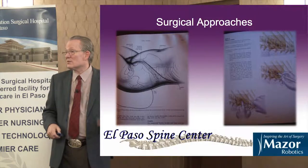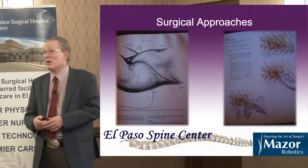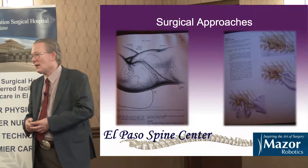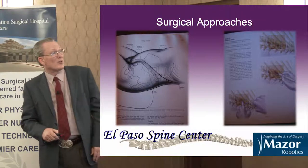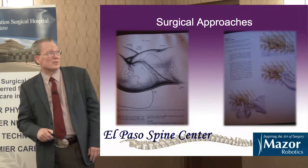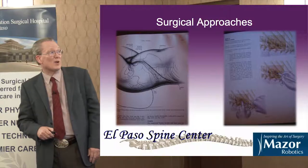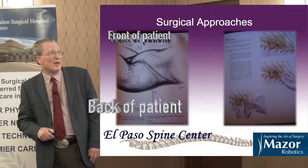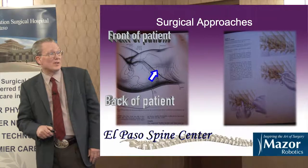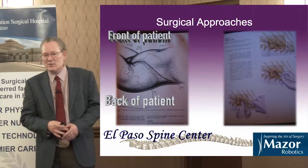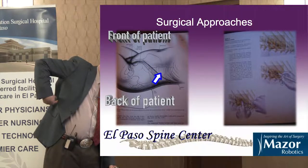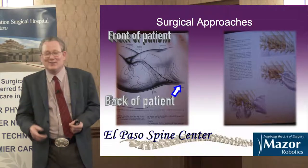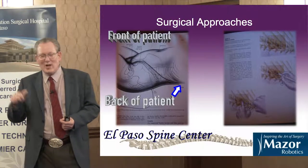I always like to show this — it's a textbook from when I first came to El Paso in 1992. This is how I was trained to do that same surgery. You can see the patient on their side, and the most important thing is the incision — it starts below the belly button and heads up into the chest. It's about half the length of the human body. So half the length of the thumb is a lot better.